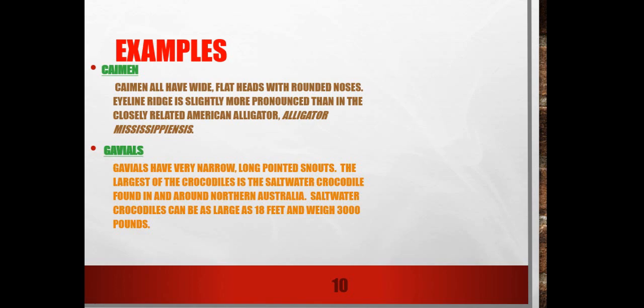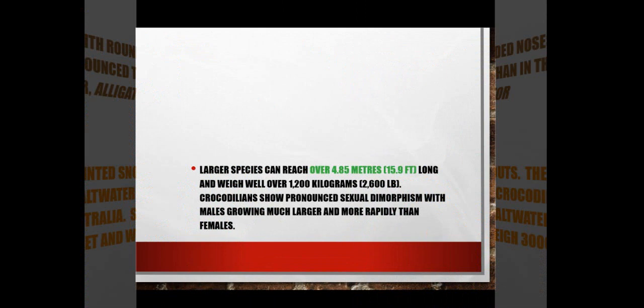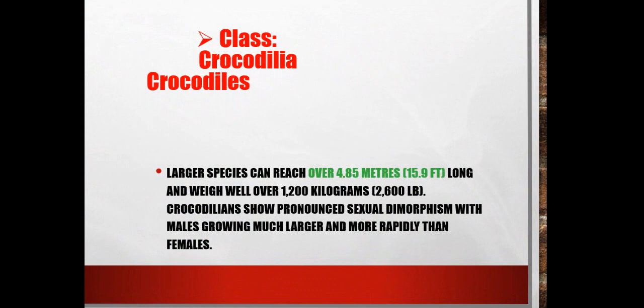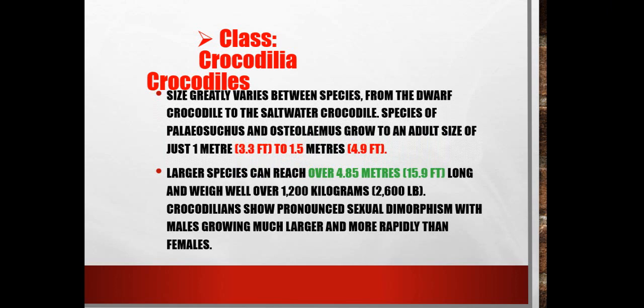The Saltwater Crocodile is found in and around Northern Australia. The larger species can reach over 4.85 meters long and weigh over 1,200 kg to 2,200 kg. Crocodiles show pronounced sexual dimorphism, with males growing much larger and more heavily built than females. The size can greatly vary between species, from the Dwarf Crocodile to the Saltwater Crocodile, ranging from just 1 meter (3.3 feet) to 1.5 meters.